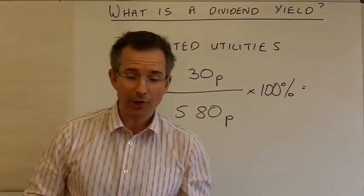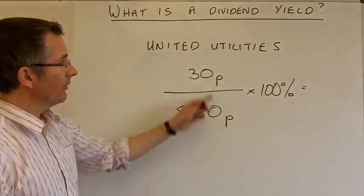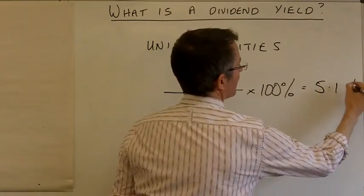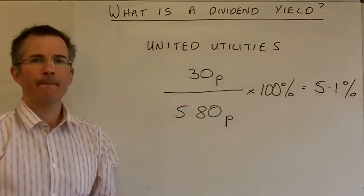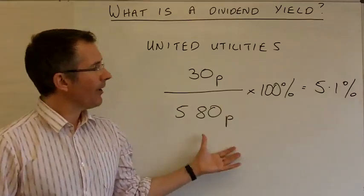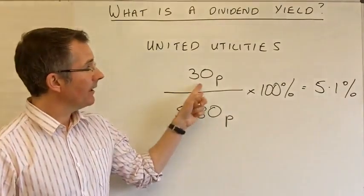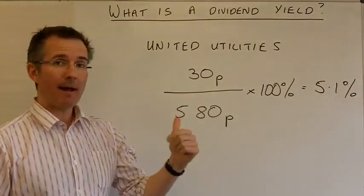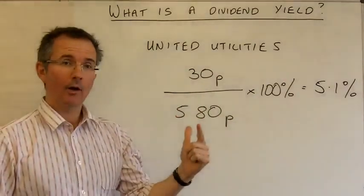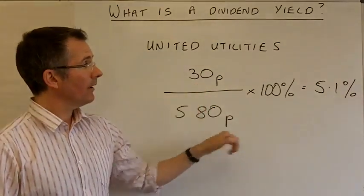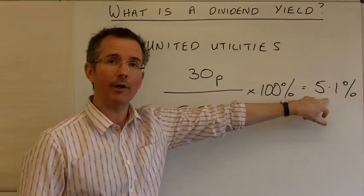And if I crunch the numbers correctly, that gives a yield of around 5.1%. Okay. So if I pay £5.80 for United Utilities shares, they pay me a dividend. This is the interim and final dividend combined of 30p on every share I own. As a percentage, that's a 5.1% return.